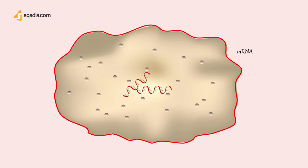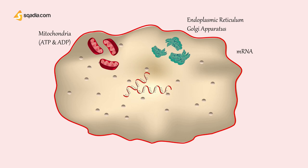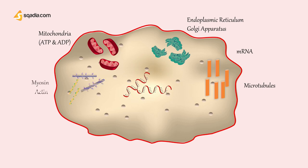Platelets have no nucleus but contain certain cytoplasmic organelles, since they are budded-off structures of the larger megakaryocytes. Inside the platelets, we have messenger RNA and residuals of both endoplasmic reticulum and the Golgi apparatus. They synthesize various enzymes and especially store large quantities of calcium ions. We also have mitochondria and enzyme systems capable of forming ATP and ADP. We can also find microtubules and actin and myosin molecules, which are contractile proteins similar to those found in muscle cells.